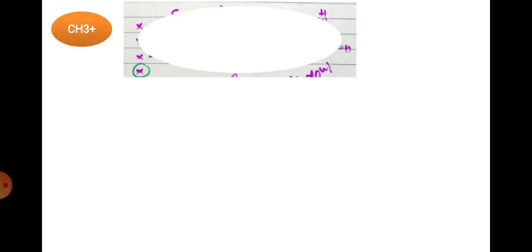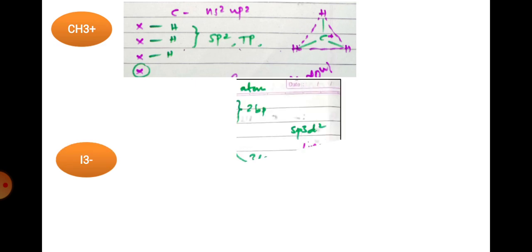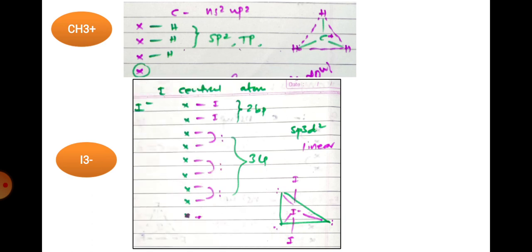For CH3⁺ (methyl cation), carbon has four valence electrons but one is removed due to the positive charge, leaving three. Three electrons are shared with three hydrogens — three bond pairs, zero lone pairs, so sp2 hybridization, trigonal planar. All carbocations are sp2 hybridized. For I3⁻, iodine is the central atom with ns2np5 — seven electrons plus one for the negative charge equals eight. Only two electrons are shared with iodine; three lone pairs remain. Two bond pairs + three lone pairs = 5, sp3d hybridization, linear shape, trigonal bipyramidal geometry.